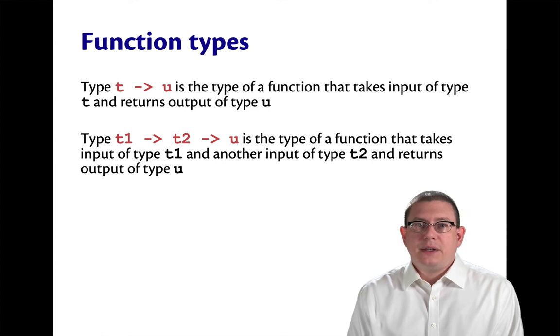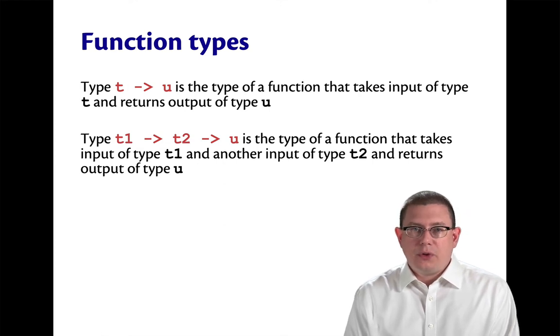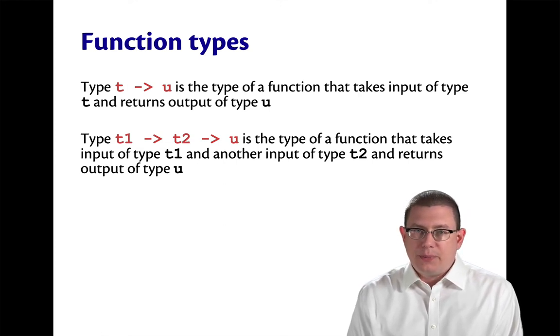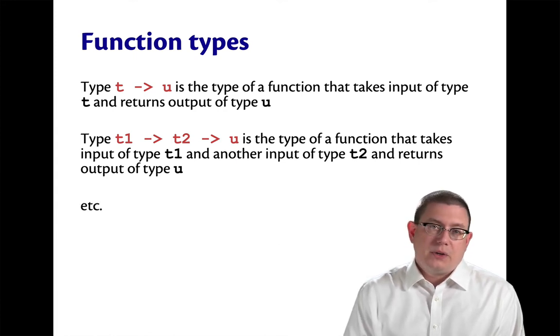So the last type at the end of all of those arrows is always the output type of the function, and all of the types that come before that in that chain of arrows are the inputs. You could have functions that take in any number of inputs this way.